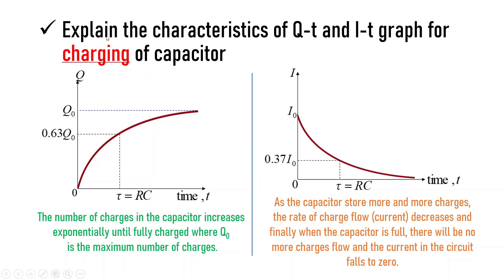Next, the learning outcome is to explain the characteristics of Q-t and I-t graphs for charging and discharging processes. Let's see for charging of a capacitor.